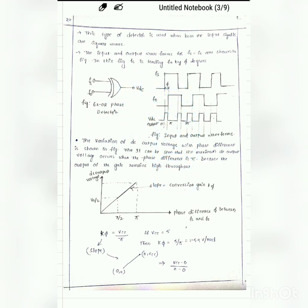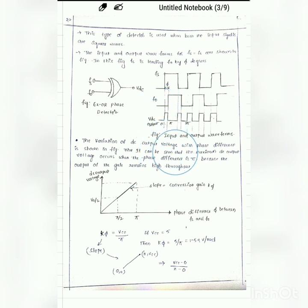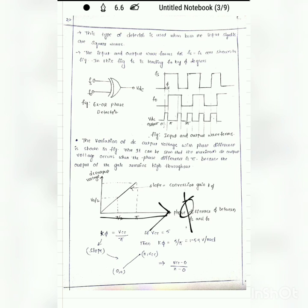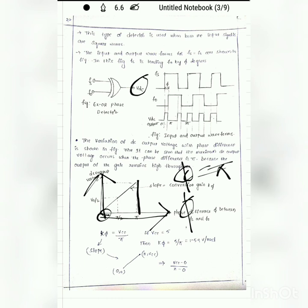Let us draw the curve between the phase difference φ versus the DC output voltage (error voltage). The maximum error voltage is obtained only when the phase difference between FS and F0 is π. Otherwise the error voltage is zero. We get the maximum output voltage only when the phase difference equals π.